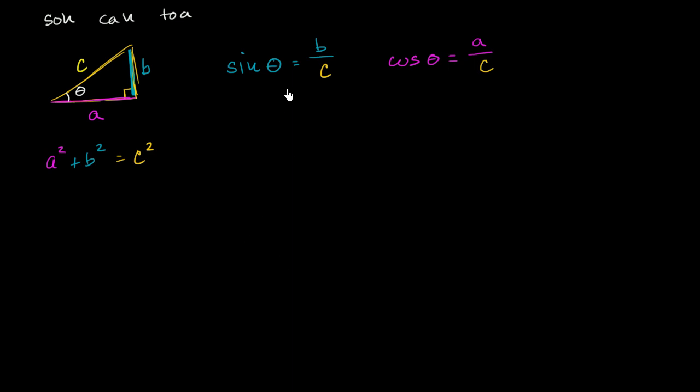Now how could I relate these things? Well, it seems like if I square sine of theta, then I'm going to have sine squared theta is equal to b squared over c squared. And cosine squared theta is going to be a squared over c squared. It seems like I might be able to add them to get something that's pretty close to the Pythagorean theorem here. So let's try that out. So sine squared theta is equal to b squared over c squared. I just squared both sides. Cosine squared theta is equal to a squared over c squared.